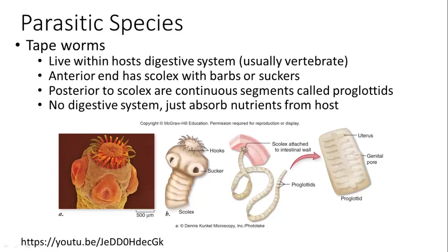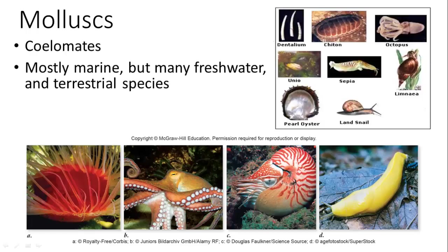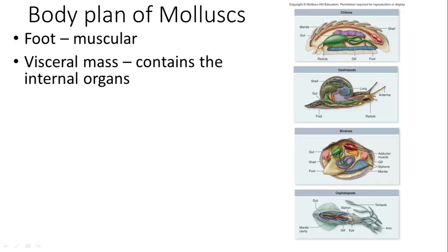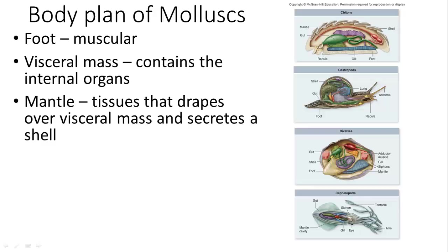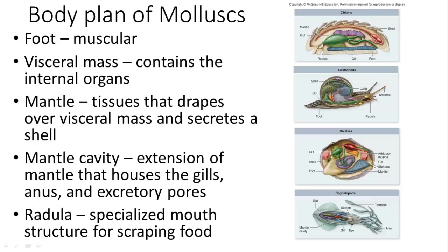Mollusks are coelomates, mostly marine but with some freshwater and terrestrial species. There are four major groups: chitons, gastropods, bivalves, and cephalopods. Most have a muscular foot, a visceral mass containing internal organs, a mantle that secretes the shell and covers vital organs, a mantle cavity with gills and excretory pores, and a radula — a rasping mouthpart for grazing.